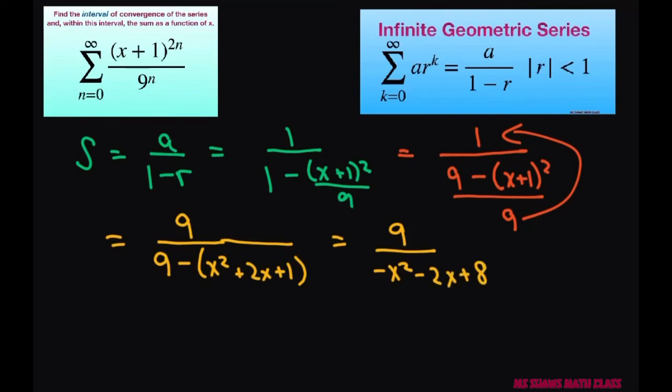And to make this look nicer, let's pull out this negative and change all these signs. That's going to be negative nine divided by x squared plus 2x minus eight. And this is your sum.